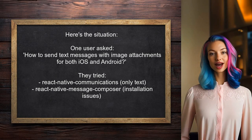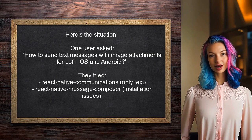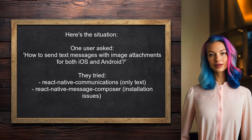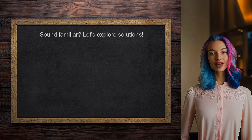Here's the situation. One user asked how to send text messages from a React Native app with image attachments for both iOS and Android. They tried using React Native Communications, but it only supports text. They also looked into React Native Message Composer, but faced issues with installation and functionality. Sound familiar? Let's explore some solutions together.